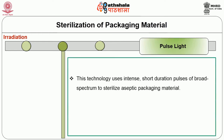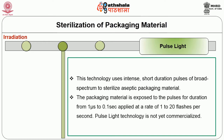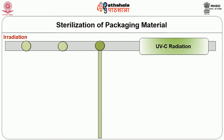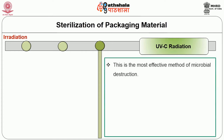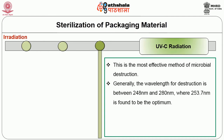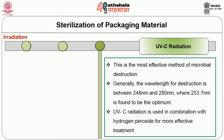Pulse light is also used for sterilizing the packaging material. This technology uses intense short duration pulses of broad spectrum light to sterilize aseptic packaging material. The packaging material is exposed to pulses for a duration of 1 microsecond to 0.1 second, applied at the rate of 1 to 20 flashes per second. Pulse light technology is not yet commercialized. UV radiation is also a method for sterilizing packaging materials. Generally the wavelength for destruction is between 248 nanometers and 280 nanometers, where 253.7 nanometers is found to be the optimum.